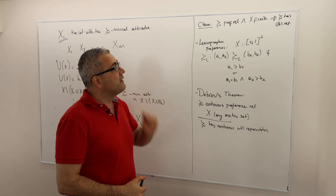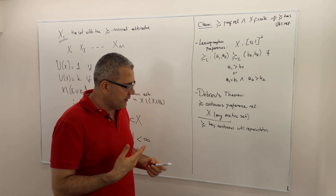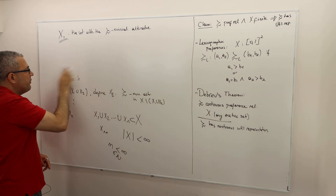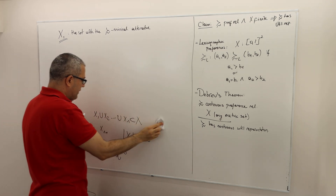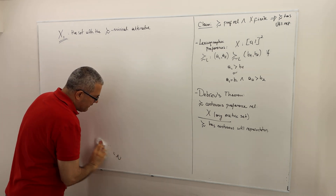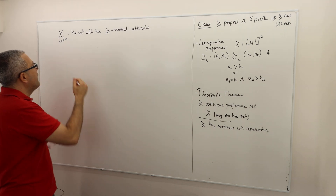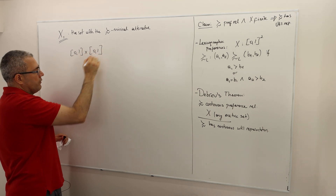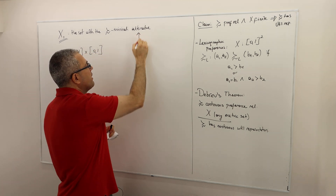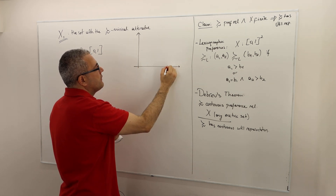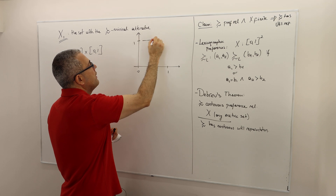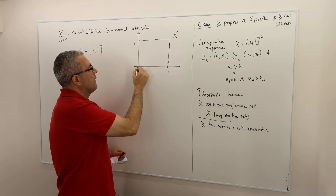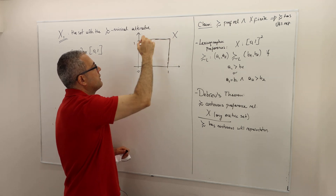Next are lexicographic preferences. Lexicographic preferences are actually pretty intuitive, although their definition is rather awkward. Let's consider the simplest environment where X is the [0,1] interval times the [0,1] interval — basically the unit square — so we are in R².